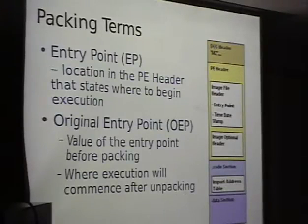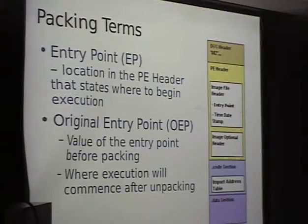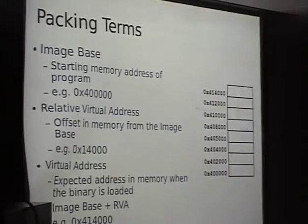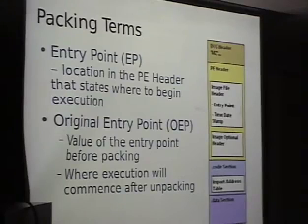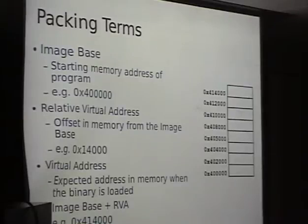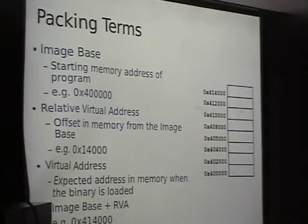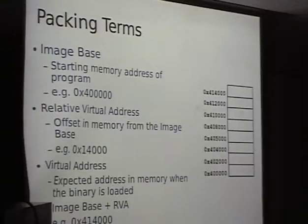Finding the original entry point is important because we want to get to the very first instruction of the original program — that's where we'll be able to extract it. Another term is the image base — the starting memory address of the program, stored in the image optional header (which ironically is required, but it's Microsoft). When a program loads into memory, its first instruction isn't going to be at memory address 0. It will install somewhere else. Because of relocation, the image base can be anywhere in memory — most of the time it's 0x400000.